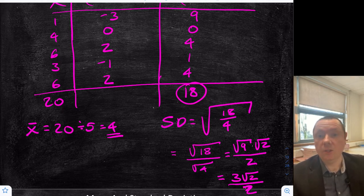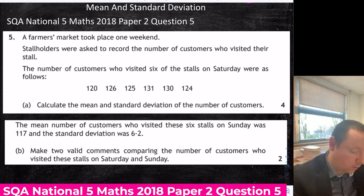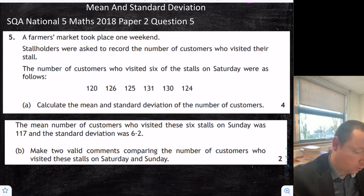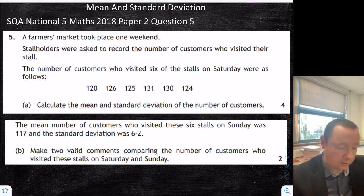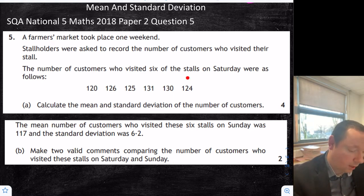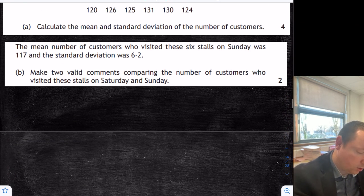Refer back to the surds unit for more work on surds. Now a mean and standard deviation question — SQA National 5 Maths 2018 Paper 2 Question 5. A farmer's market took place one weekend. Stallholders recorded the number of customers who visited their stall. Calculate the mean and standard deviation for the six stalls on Saturday, then make two comments about Saturday and Sunday.